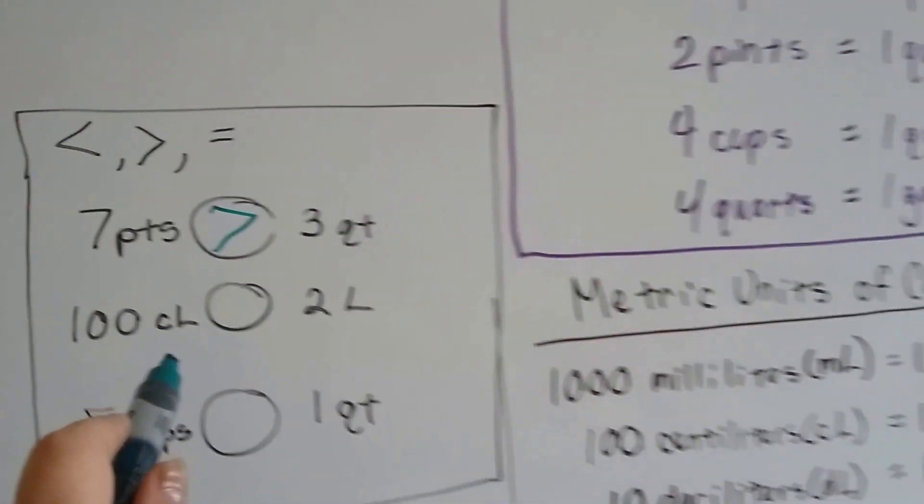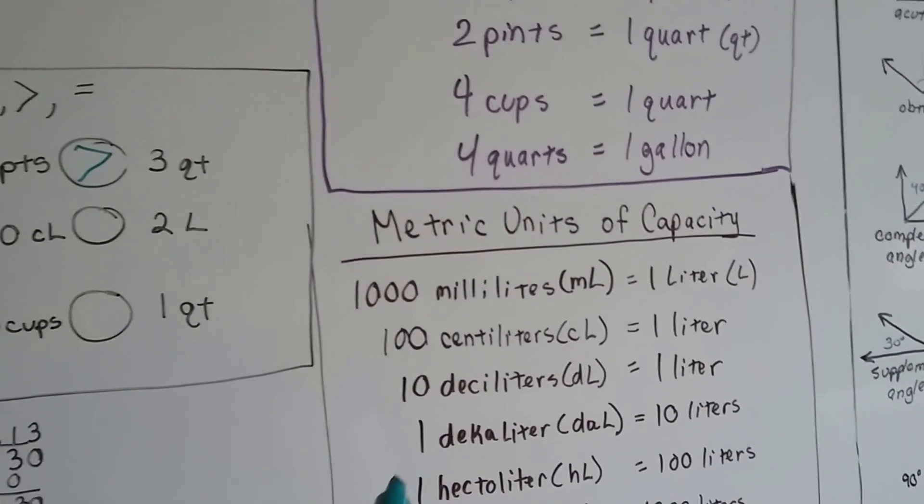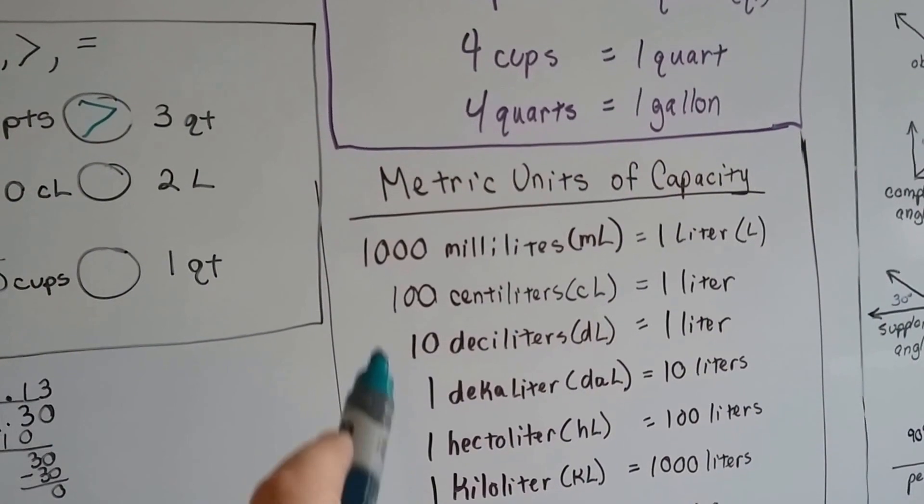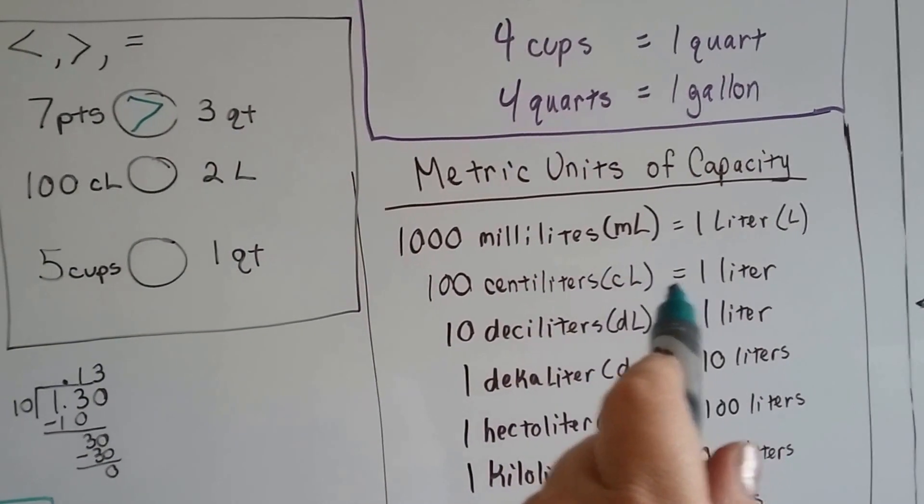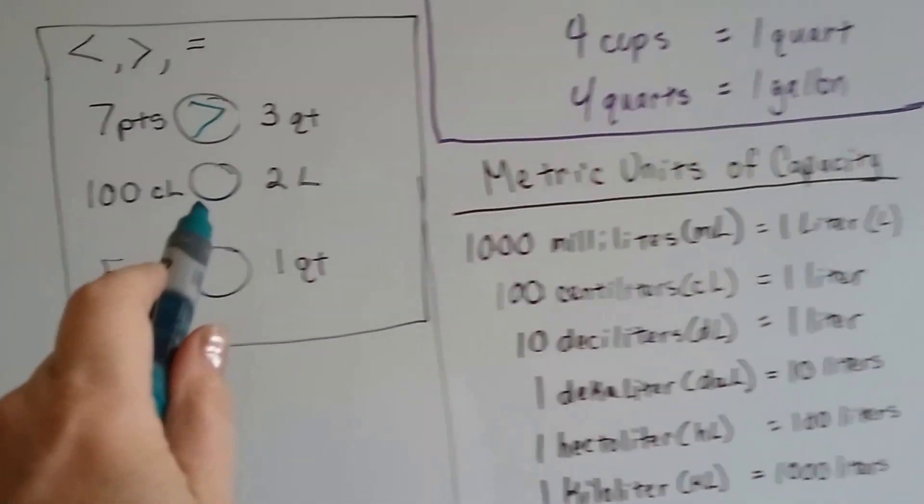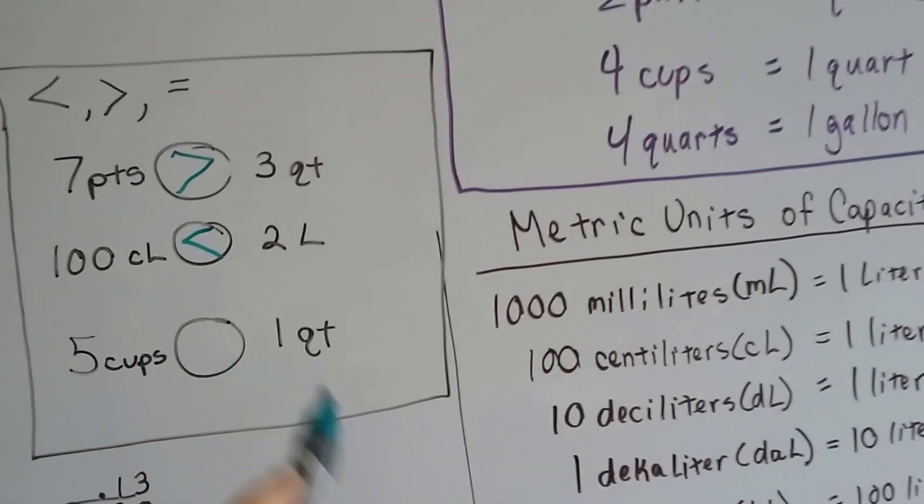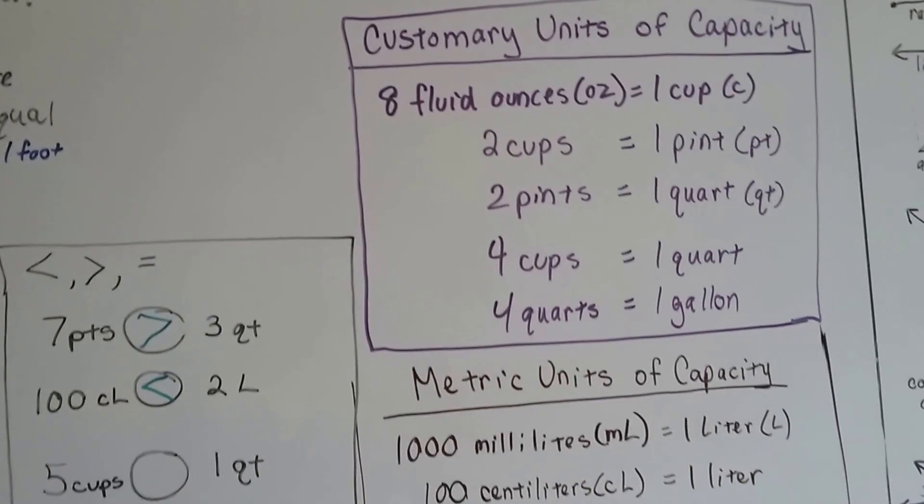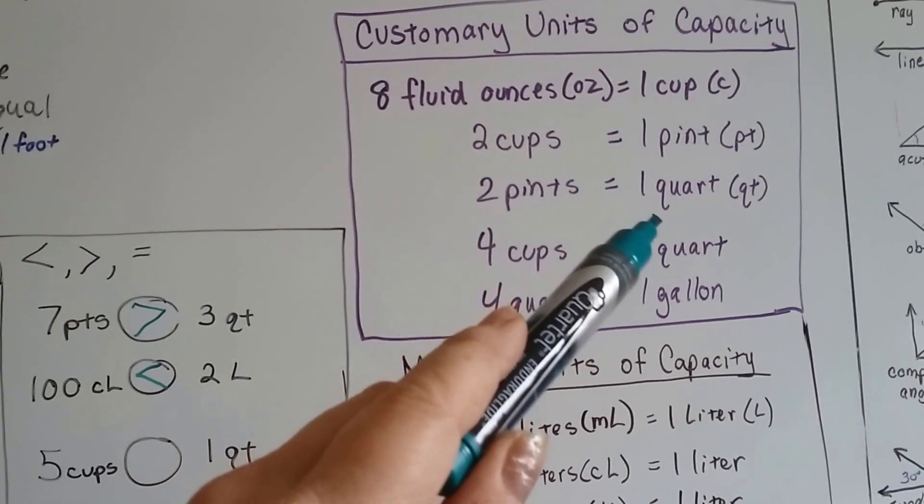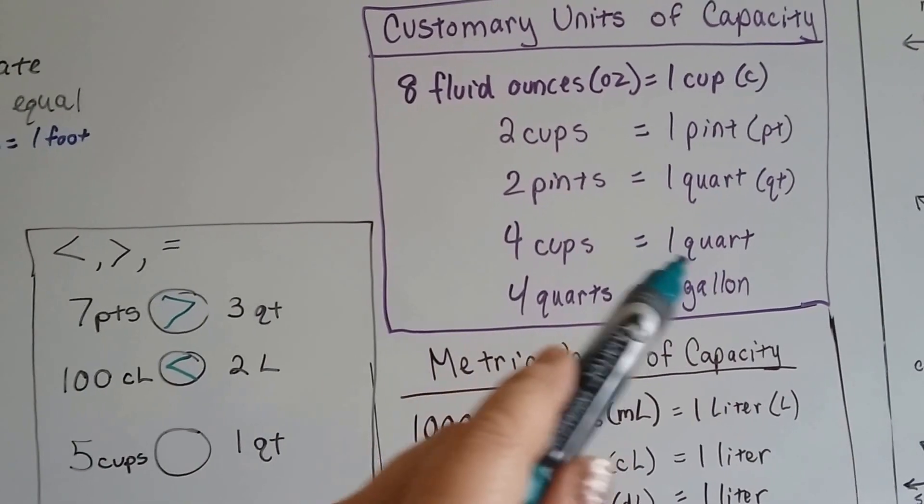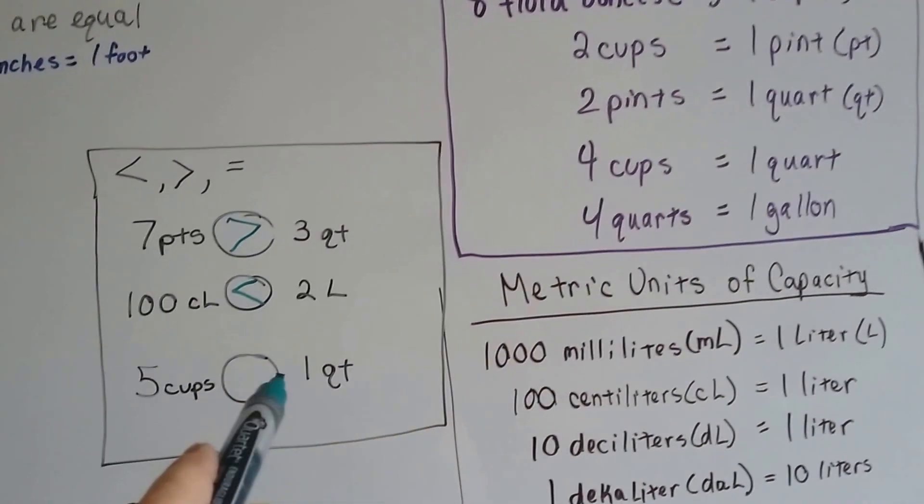How about 100 centiliters or 2 liters? 100 centiliters is equal to 1 liter, so 2 liters is definitely bigger. What about 5 cups or 1 quart? 4 cups is 1 quart, so 5 cups is bigger than a quart.